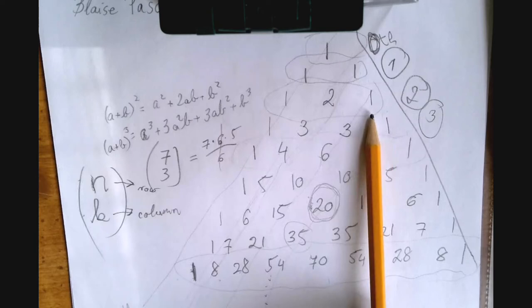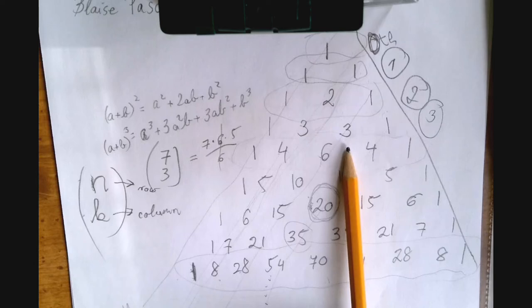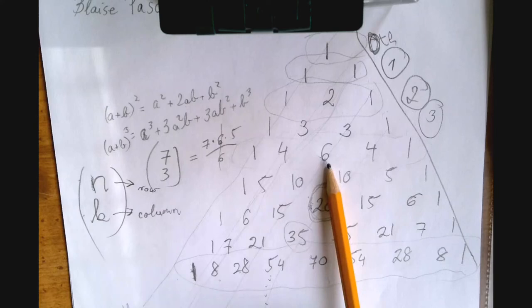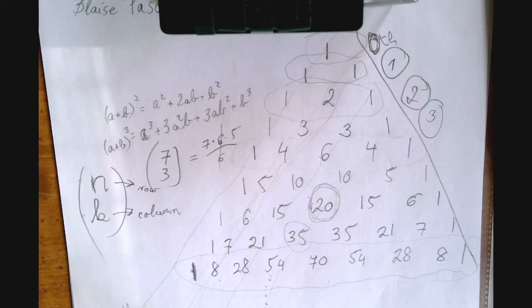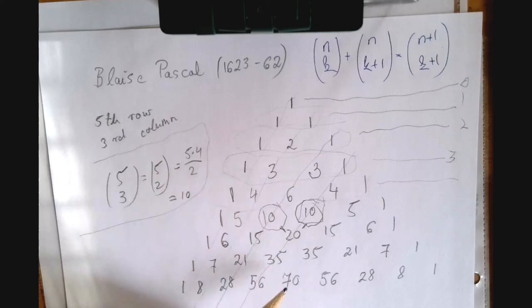1 minus 4 is negative 3, plus 6 is plus 3, minus 4 is negative 1, plus 1 is 0. So if you assign alternating signs to the numbers in a row, then instead of a 2 power, they add up to 0. We get these combinations because the way we generate the Pascal triangle is exactly the way combinations behave.